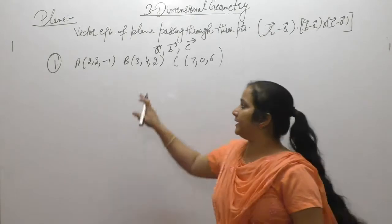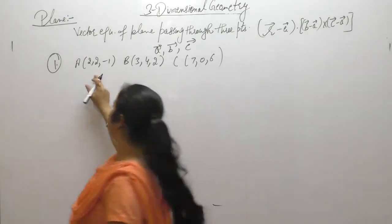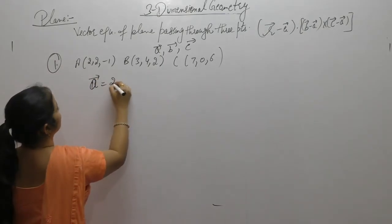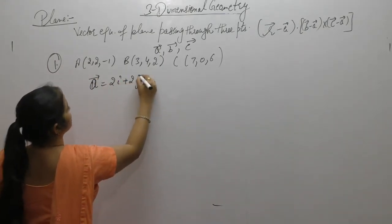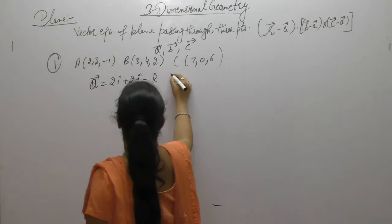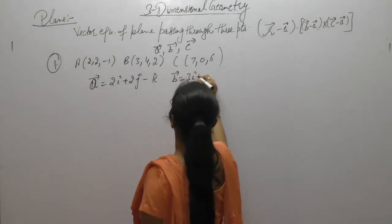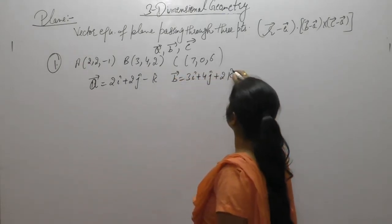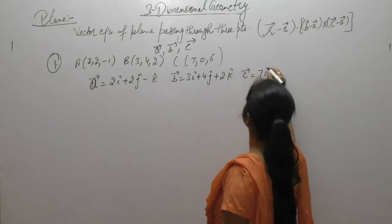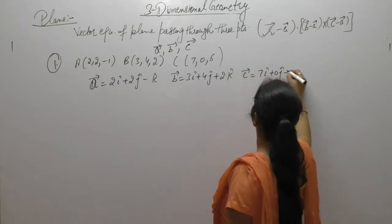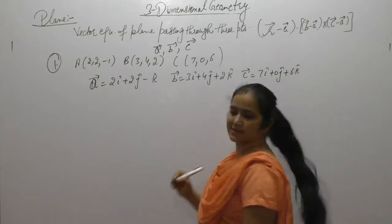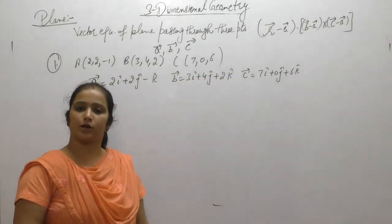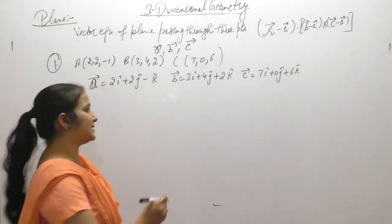Point A has position vector A = 2i + 2j - k. B vector is 3i + 4j + 2k. And C vector is 7i + 0j + 6k. First we want to find (B - A) cross product with (C - A).